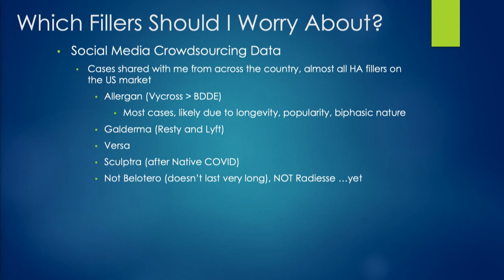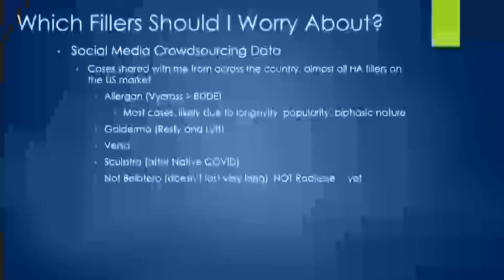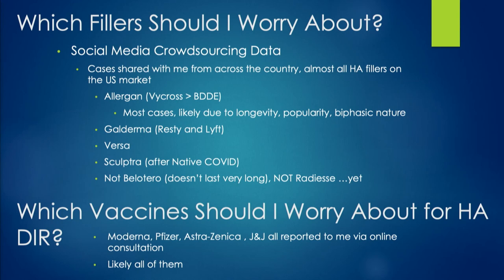From our crowdsourcing data, which we're going to publish, Vicross seems to be the most common culprit — likely because of the short-chain HA and also because it has the most longevity and is the most popular filler in the U.S. But I've seen reactions with every single filler, with the possible exception of Radiesse and Belotero, which is a very short-acting HA. We've seen it with all the vaccines, including AstraZeneca in India and J&J — so it can happen with any of them.